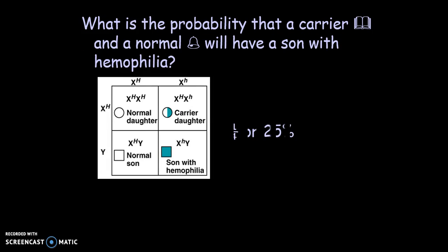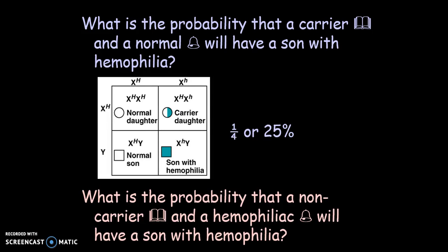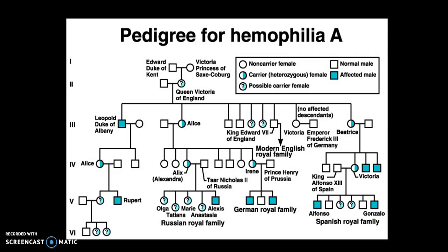This Punnett square shows crossing a normal male with a female who is a carrier for hemophilia, showing the resulting probabilities. This is a pedigree for hemophilia — pedigrees show traits through generations. Females are circles, males are squares. Shading means the individual has the trait, and if it's half shaded, it's a carrier.